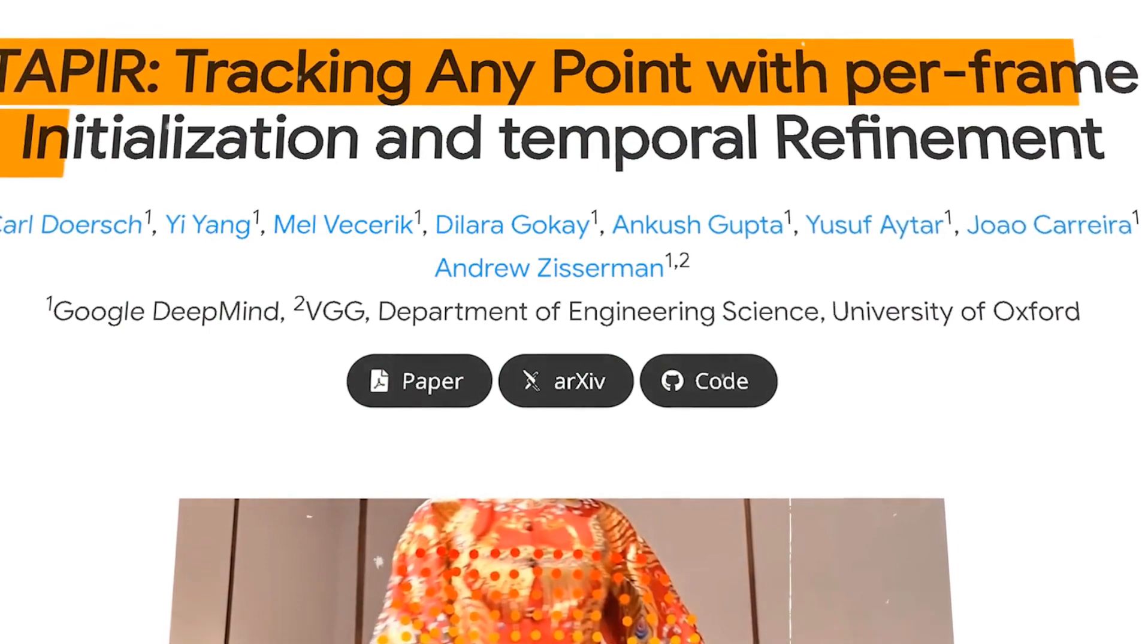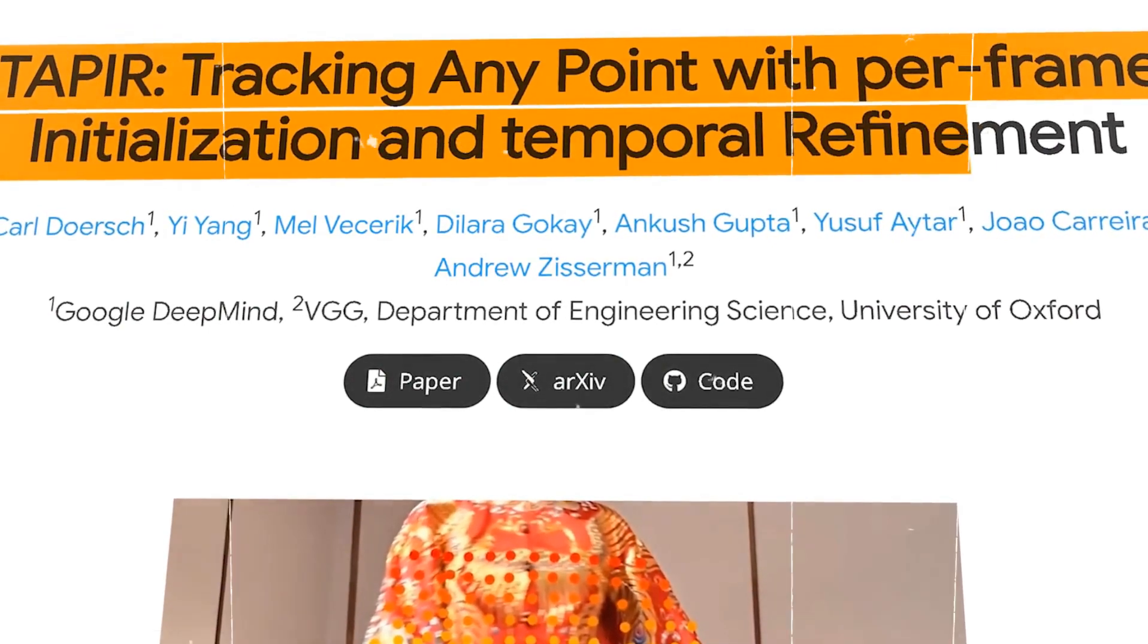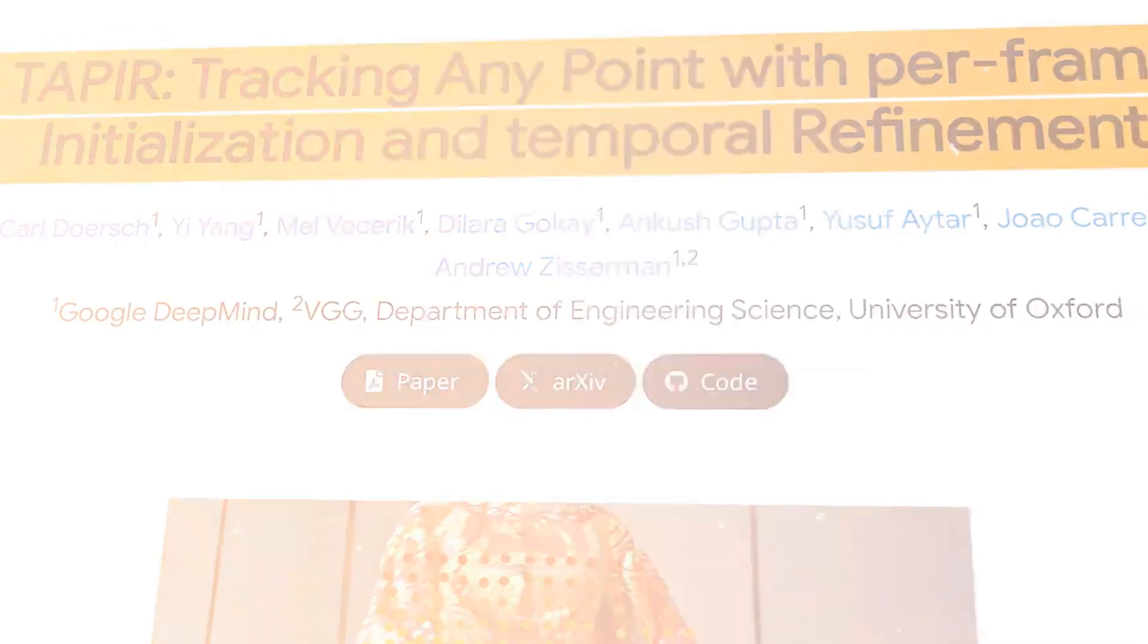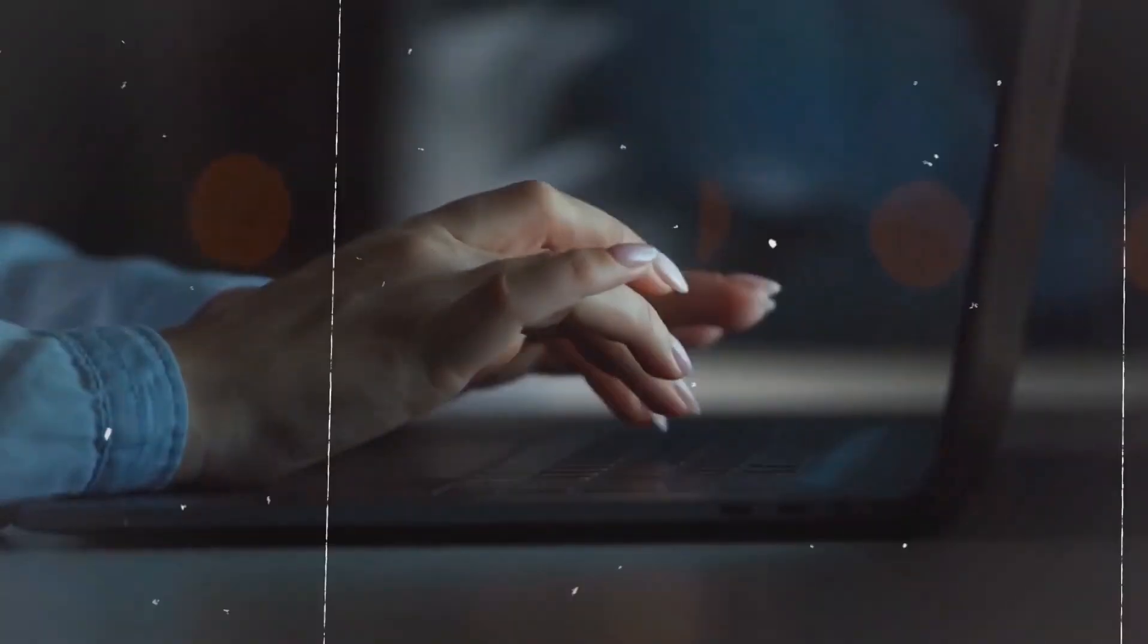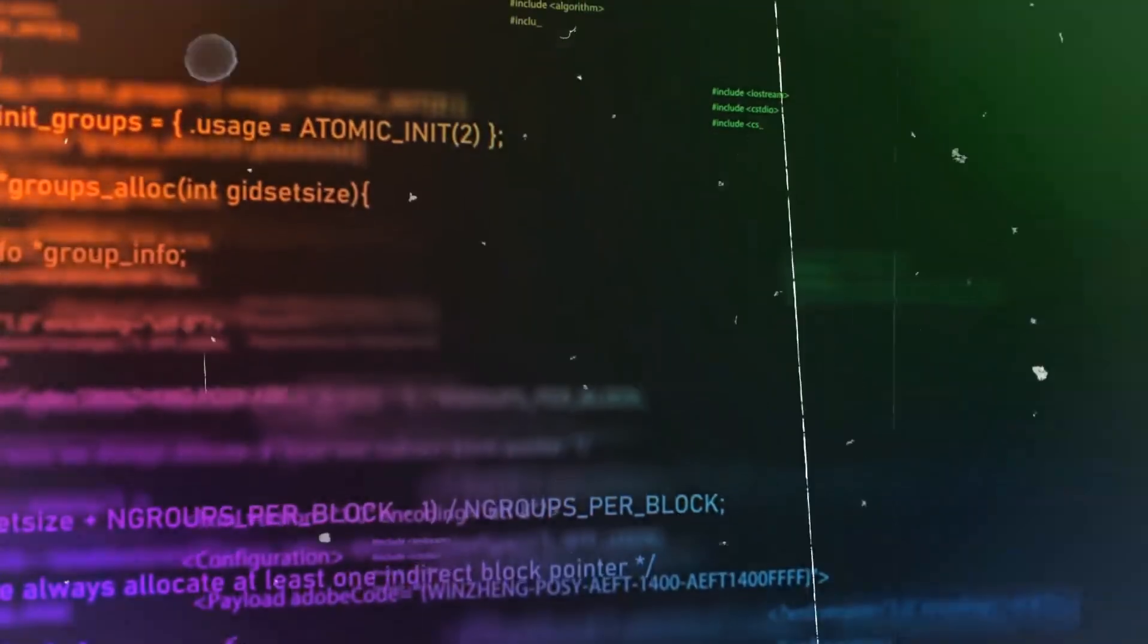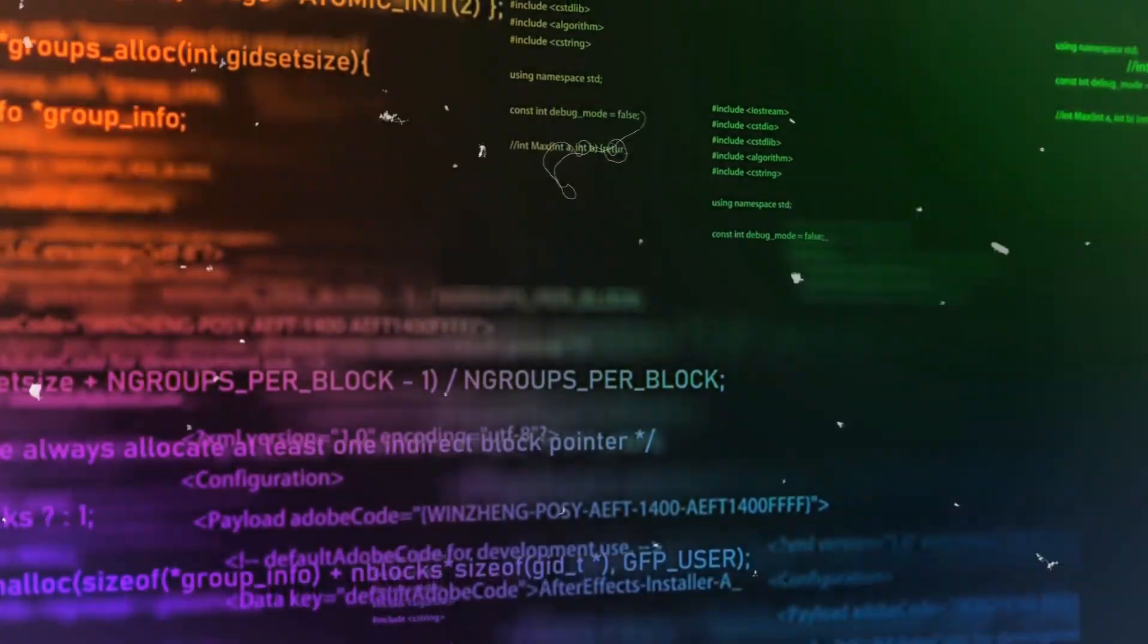It has two stages: a matching stage and a refinement stage. The Tapir model examines each frame of the video sequence separately during the matching stage in order to identify a good candidate point match with a query point. The goal is to determine the query point's most likely associated point in each frame. This process is carried out frame by frame to ensure the Tapir model can track the query point's journey throughout the video.